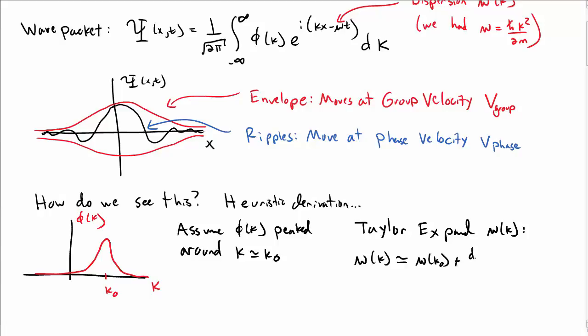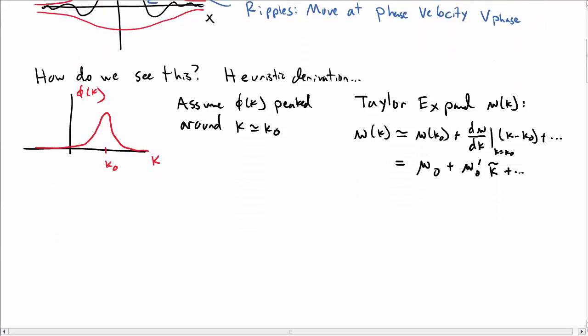So I'll write omega of k as omega at k0 plus the first derivative of omega evaluated at k0 times k minus k0 plus dot dot dot. We're not going to need the higher order terms, so we're just going to write this as omega_0 plus omega_0 prime k-twiddle, where omega_0 prime is itself just a constant and we made a new variable k-twiddle which is k minus k0.